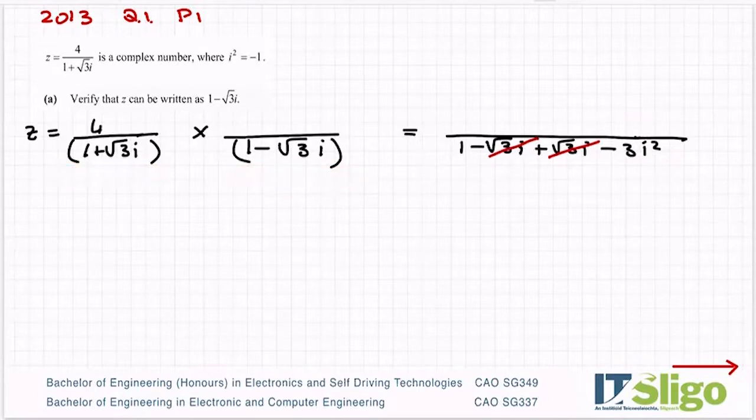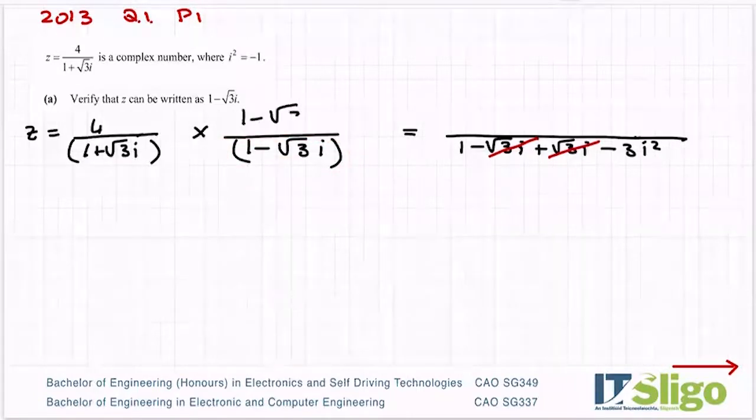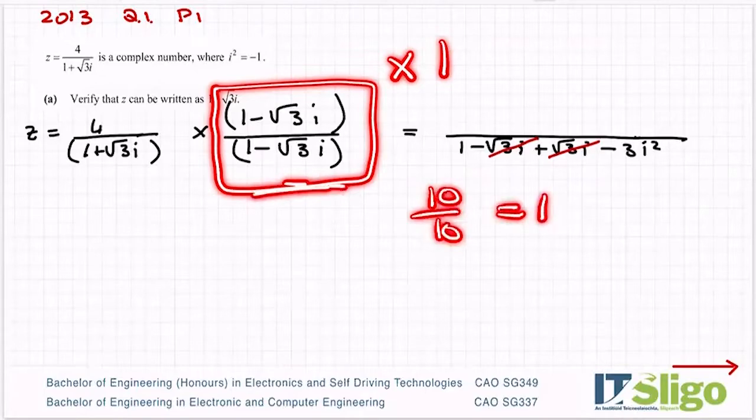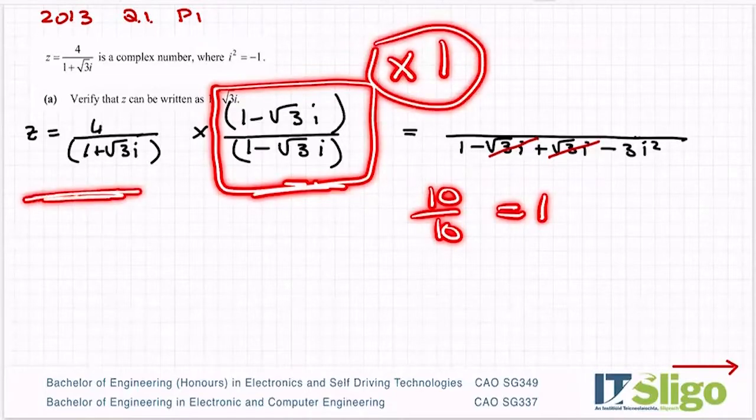You are not allowed to divide by imaginary numbers in maths, so you must remove them. Now what you do to the bottom, you must also do to the top. So what am I essentially multiplying by here? Well, you're essentially multiplying by 1. Any number over itself, 10 over 10 is 1. 1 minus root 3i over 1 minus root 3i is 1. So in fact, I'm only multiplying this original equation by 1. So I'm not really changing it. I'm just rewriting it in different mathematical format.